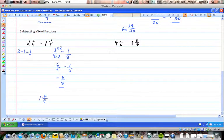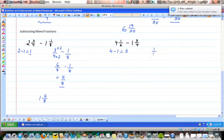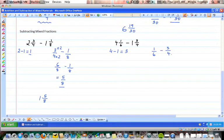So starting with the whole numbers, I have four take one is three, and then I have one over six take three over four.